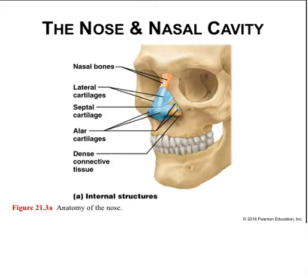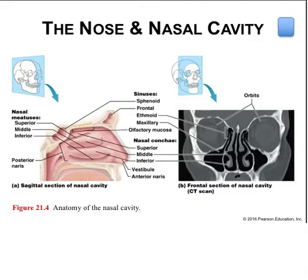Three pairs of bony projections—the superior, inferior, and middle conchae—are processes of the ethmoid bone. The inferior concha is its own bone and fills most of the space in the nasal cavity. The purpose of the conchae is to increase the surface area of the nasal mucosa and allow air to swirl and contact the mucous membrane so it is more effectively filtered, humidified, and warmed up. The nasal conchae curl about three narrow passages—the superior, middle, and inferior nasal meatuses—generating turbulence and ridding dust and debris from inspired air.